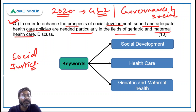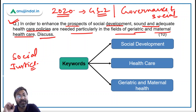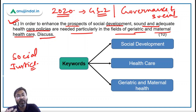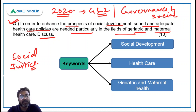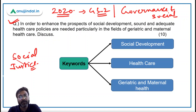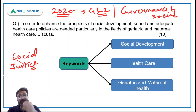Geriatric means old age. We must know the meaning of all words in the question — only then can we provide good inputs. If our vocabulary is weak, we should first strengthen it. So geriatric means old age, and maternal means related to mother. Before starting any answer, we need to spend 10–15 seconds identifying the keywords in the question.